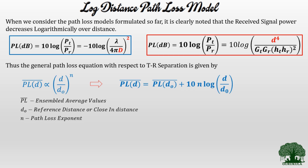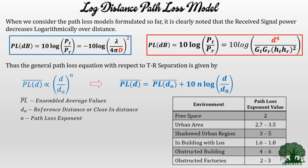Wherever you see bars on a variable, that represents an ensemble-averaged value. PL(d) can be calculated either by using the free space model equation or the two ray model equation depending on the environment. Measurements are made in different environments, all values are averaged together, and the final value for PL(d) is taken. d₀ is the reference distance, and n is the path loss exponent.